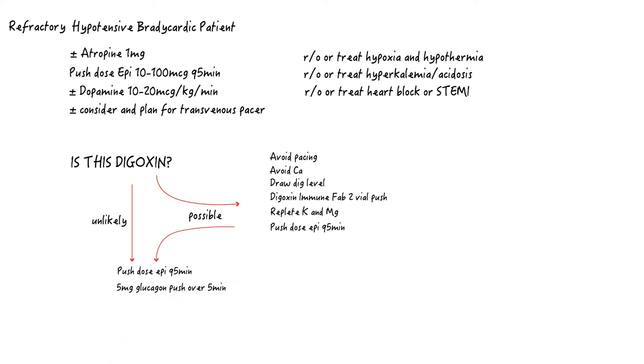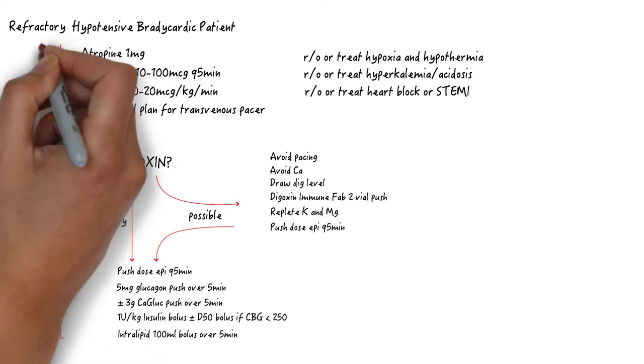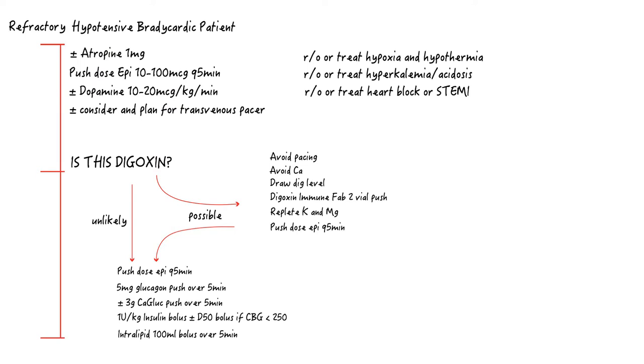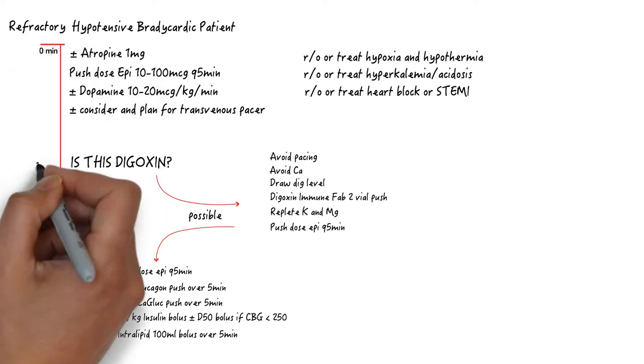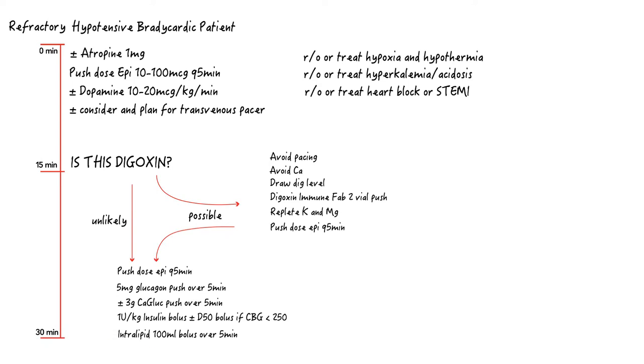We will go over the individual treatments next, but quickly. Push glucagon, 5 mg, over 5 minutes. If that didn't work, push calcium gluconate. If that didn't work, push 1 unit per kilogram of insulin as a bolus. And an amp of D50 if their starting blood sugar was less than 250. And if all of that didn't work, push intralipid, 100 ml bolus, over 5 minutes. Notice that each step is 5 minutes. So ideally you will have every step done by 30 minutes of meeting this acutely ill and dying patient.